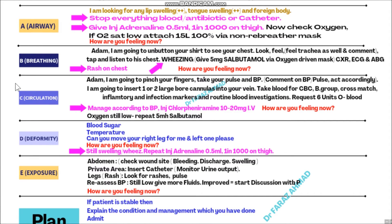For C - Circulation - look for three things: perfusion, pulse, and blood pressure. Verbalize: 'Adam, I am going to pinch your finger, I will take your pulse and blood pressure.' Comment on the readings and act accordingly. If blood pressure is normal, insert one cannula. If blood pressure is low, insert two large-bore IV cannulas. Verbalize: 'I am going to insert one or two large-bore cannulas as per the need.' Take blood samples as well.